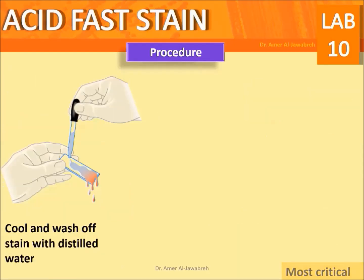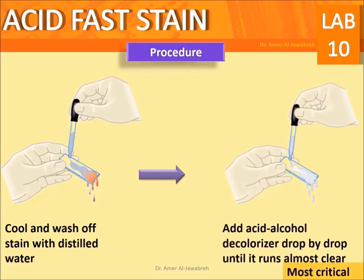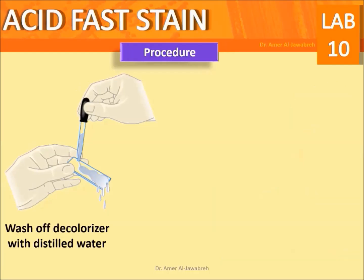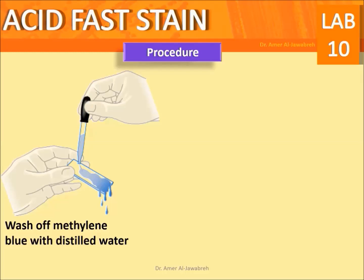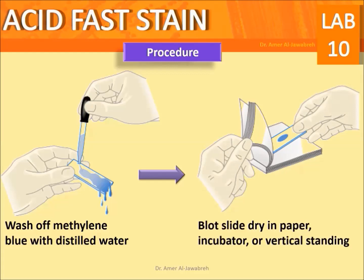Cool and wash off the stain with distilled water. Add acid alcohol decolorizer drop by drop until it runs almost clear. Wash off the decolorizer with distilled water. Counter stain with methylene blue or malachite green for two minutes. Wash off methylene blue with distilled water. Blot the slide dry with paper, in an incubator, or by vertical standing.